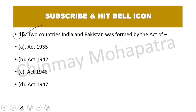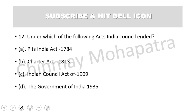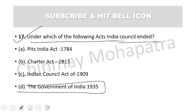Question number 16: Two countries India and Pakistan were formed by which act? The right answer is the 1947 Act. Question number 17: Under which act did the Indian Council end? The right answer is the Government of India Act 1935 — under which the Indian Council ended.